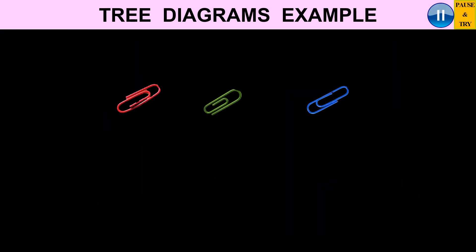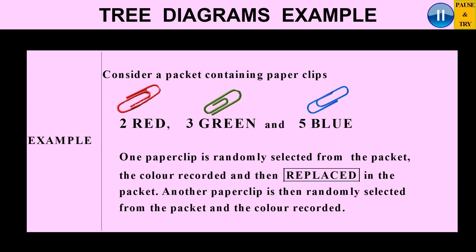To illustrate the use of tree diagrams, let's consider an example. We've got a packet containing some paper clips: two red, three green, and five blue. One paper clip is randomly selected from the packet, the color recorded, and then replaced — the emphasis is we put it back in the packet. Another paper clip is then randomly selected and the color is recorded.